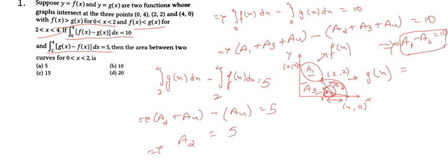Putting A2 = 5 into equation one: A1 = 10 + 5 = 15. So A1 is 15. The area between the two curves f(x) and g(x) from 0 to 2 is A1, and our answer is option C, that is 15.